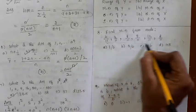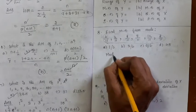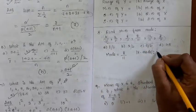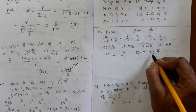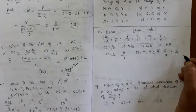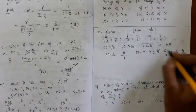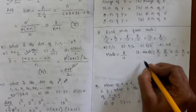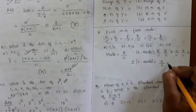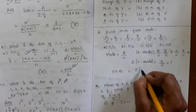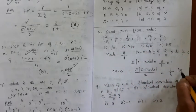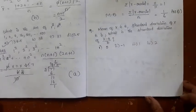Find the mean deviation from mode. The observations are given; 8/11 is repeated twice, so mode = 8/11. Computing |x - mode|: |4/11 - 8/11| = 4/11, |6/11 - 8/11| = 2/11, |8/11 - 8/11| = 0, |9/11 - 8/11| = 1/11, |12/11 - 8/11| = 4/11, |8/11 - 8/11| = 0. The sum of all absolute deviations is 11/11 = 1. Mean deviation from mode = Σ|x - mode| / n = 1/6. The answer is option A.